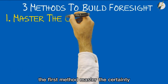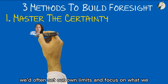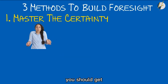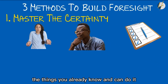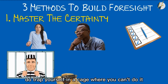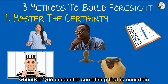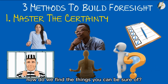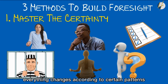The first method: master the certainty. We often set our own limits and focus on what we don't know and cannot do. Instead, you should get into the habit of starting with certainty and listing the things you already know and can do. Don't trap yourself in a cage of 'I can't do it.' Whenever you encounter something uncertain, put it aside and focus on the things you can be sure of. How do we find the things we can be sure of? Everything changes according to certain patterns.